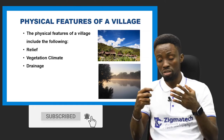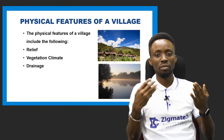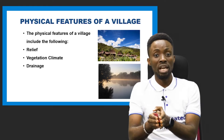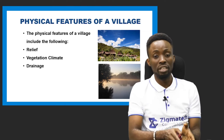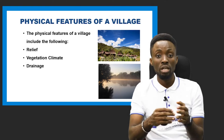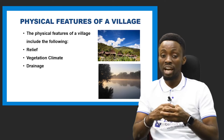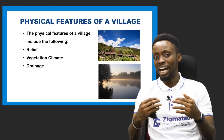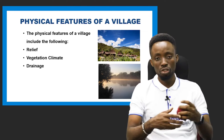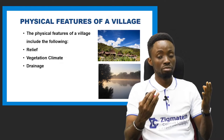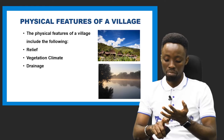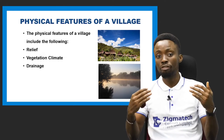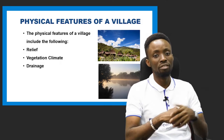Regarding vegetation and climate, villages in the south are found in the equatorial or rainforest zone, while villages in the northern part of Nigeria are found in the savannah or grassland zone. The climate in the north is very harsh, while in the southwest and east, we have a conducive climate with heavy rainfall and high temperatures. For drainage, rivers like the River Niger, River Benue, Imo River, Kaduna River, and River Rima flow through most of the villages in Nigeria.